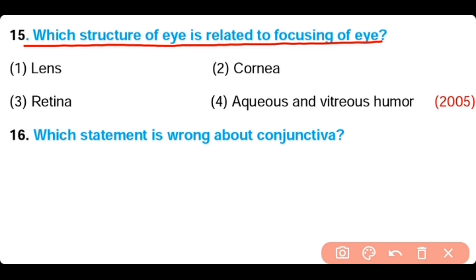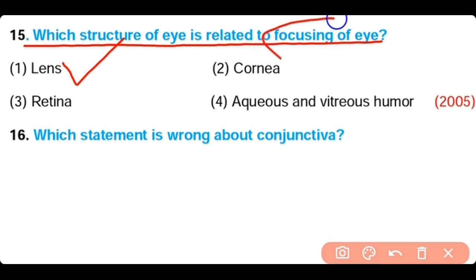Question number fifteen: Which structure of the eye is related to focusing? (a) eye lens, (b) cornea, (c) retina, (d) aqueous and vitreous humor. The answer is option one — the lens is the part of the eye that focuses light within our eye.